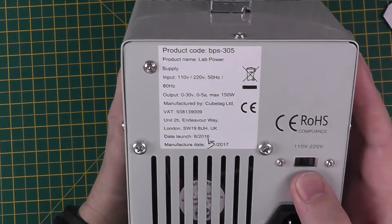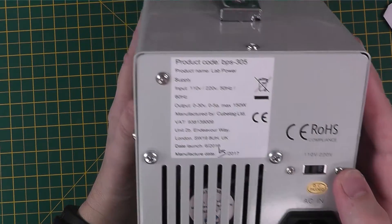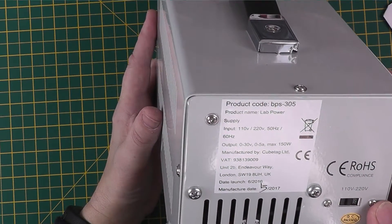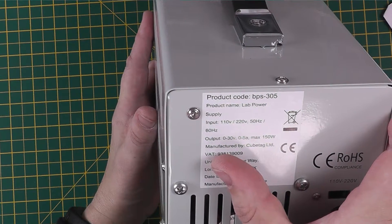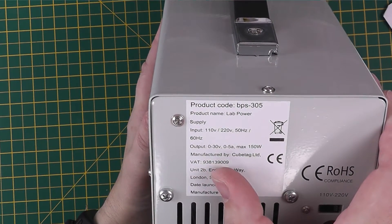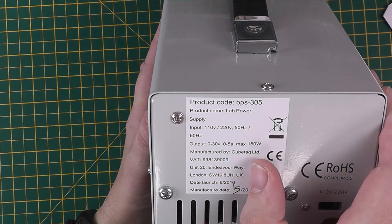We have a voltage selector between 110 volts or 220 volts. As the label says, the output can be from 0 to 30 volts and 0 to 5 amps with a maximum of 150 watts.